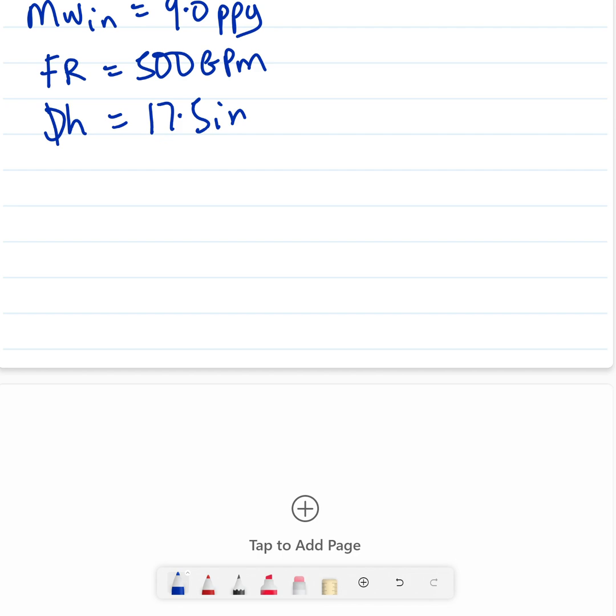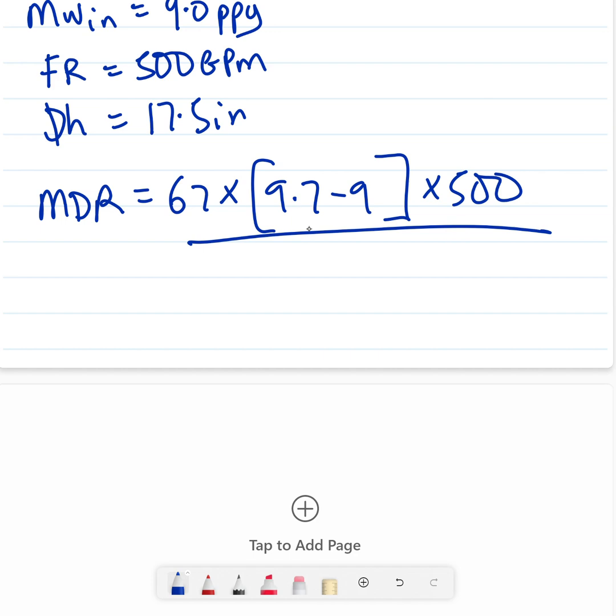Quickly, when you plug in your numbers, you're going to have your maximum drilling rate is going to be 67 times 9.7 minus 9 times 500, all over 17.5 squared. If you do the math, you'll see that your maximum drilling rate is going to be, for that 500 gallons per minute, it's going to be 76.5 foot per hour.